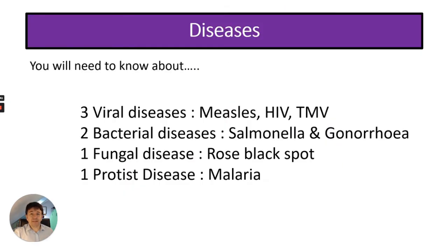According to the specification, you need to know three viral diseases — measles, HIV and TMV — two bacterial diseases — salmonella and gonorrhea — one fungal disease — rose black spot — and one protist disease — malaria.